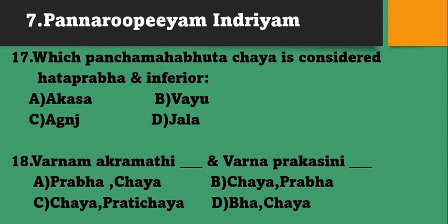Pannarubhiyam Indriyam: Which Panchamahabhuta is considered as Hadaprabha and inferior? Options: Akasha, Vayu, Agni, Jala. The Panchamahabhuta considered as Hadaprabha and inferior is Vayaviya or Vayu. Varnam Akramadi is Chaya and Varnam Prakashini is Prabha. Option B.